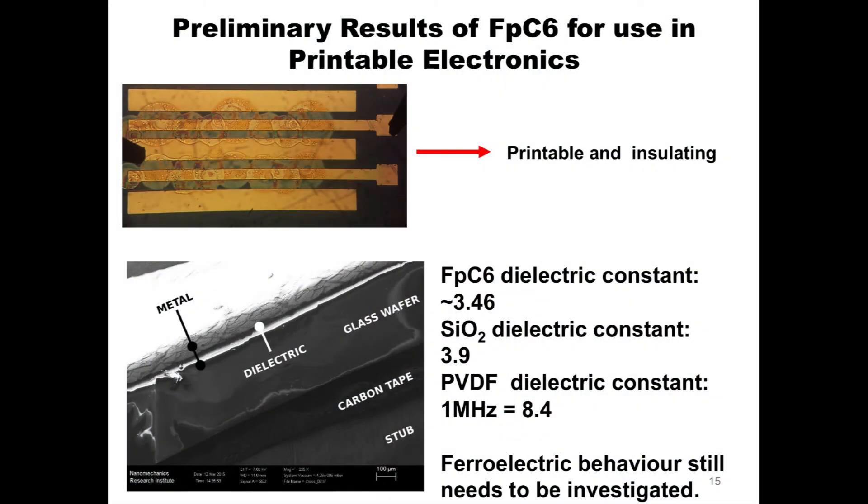So over the last month or two, I've been working on preparing a reliable way to produce a lot thicker films. And we were able to generate these capacitor structures here. So the dielectric is that white line in between the metal and the glass wafer. And it has a thickness of about 200 micrometers. And right now, we measure the dielectric constant to be 3.46. And to compare that to something like silicon dioxide, the dielectric constant is 3.9, and polyvinylidene fluoride, the ferroelectric polymer I mentioned earlier, it has a dielectric constant of 8.4 measured at 1 megahertz. Right now, we haven't done any different frequency measurements of FPC6, so we don't really know yet whether or not it's going to be ferroelectric, because it took actually a long time to figure out how to make these thicker films a lot easier.